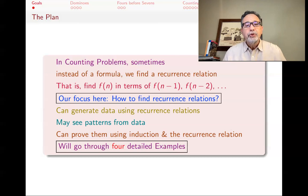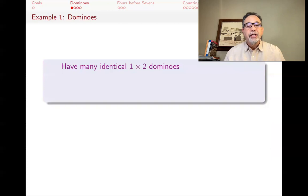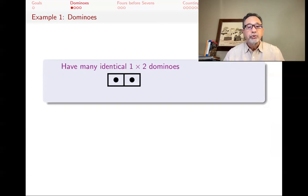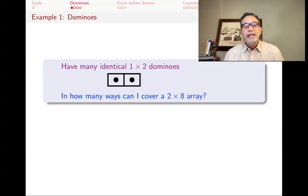What we will do in this lecture is go through four detailed examples. So let's get started. The first problem is a problem about dominoes. I have one-by-two dominoes — these are the pieces I have, and I have many of them.